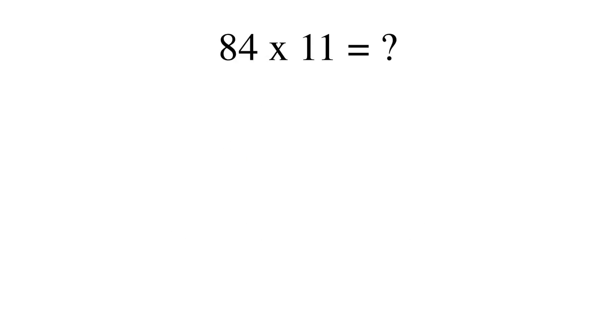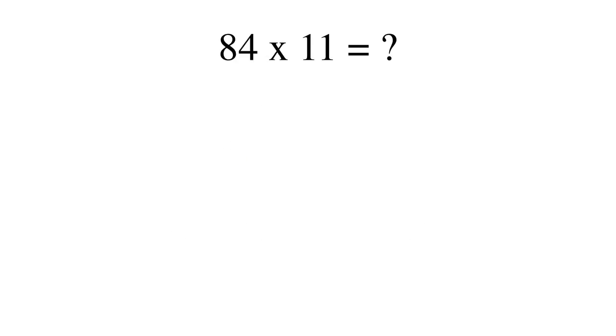Let's take another example. 84 times 11. Again, we split 84 and we write 8 and 4 with space for a digit between them. In that space we need to write the sum, the sum of the digits.